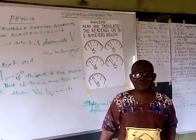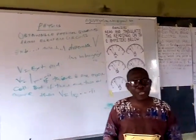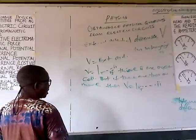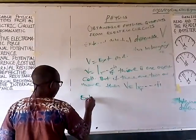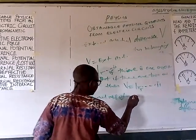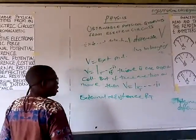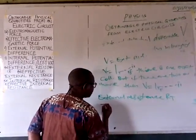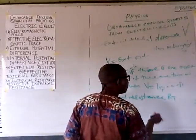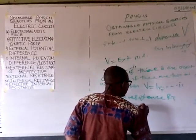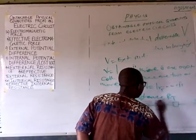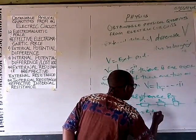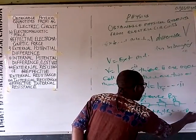Now let us look at external resistance. There are three possible ways of arranging resistors. In series arrangement, resistors R1, R2, R3 are connected end to end, and the total resistance is RT = R1 + R2 + R3.